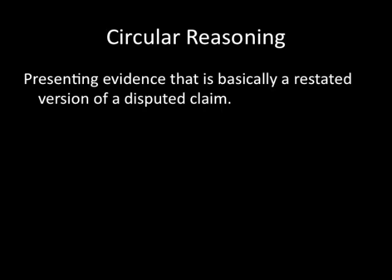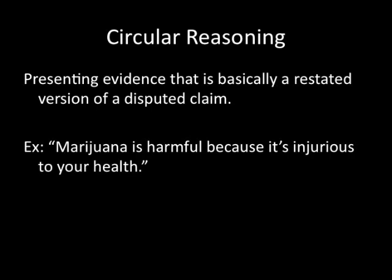The next one, circular reasoning — sometimes called begging the question — is presenting the claim as if it's already been decided when that's actually what you're trying to convince your audience about. The textbook example: marijuana is injurious to your health because it harms your body. A careless reader might accept that, but the problem is 'injurious to your health' and 'harms your body' mean exactly the same thing. So basically you're saying marijuana is bad for you because it's bad for you. You haven't proven anything — you've just restated the original statement. That's why it's called circular reasoning: you're right back where you started.